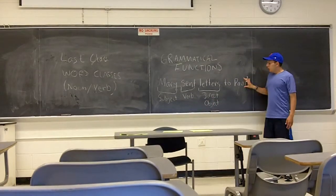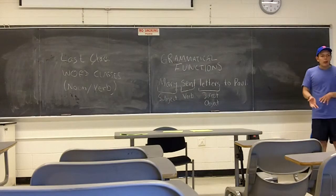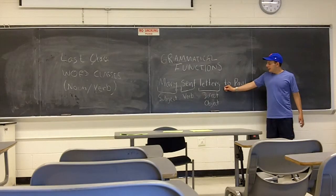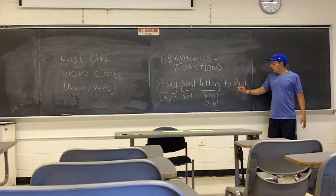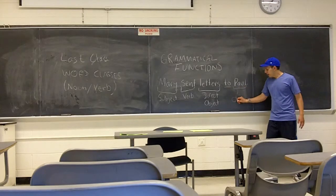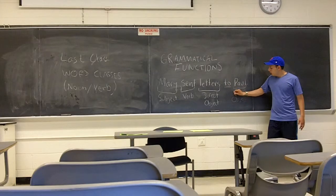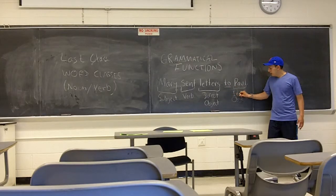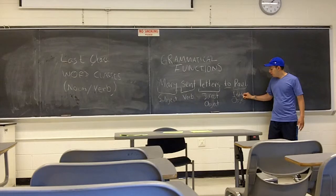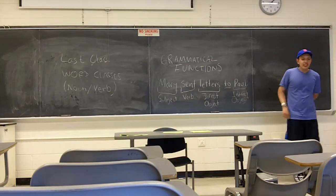And then we have Paul. That is another kind of object. Since Paul has a preposition, we are going to call him the indirect object.